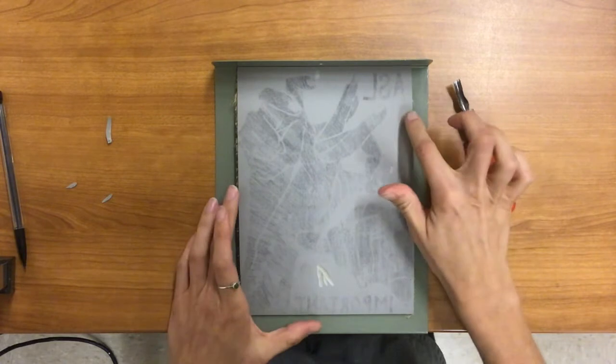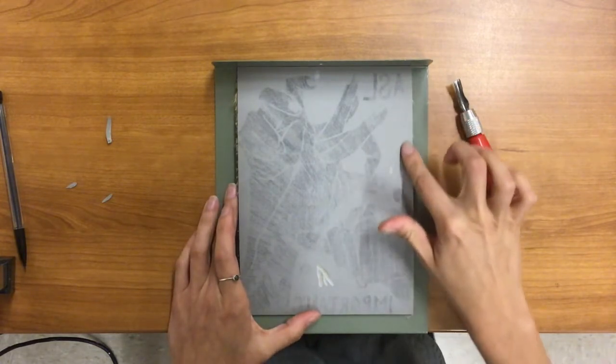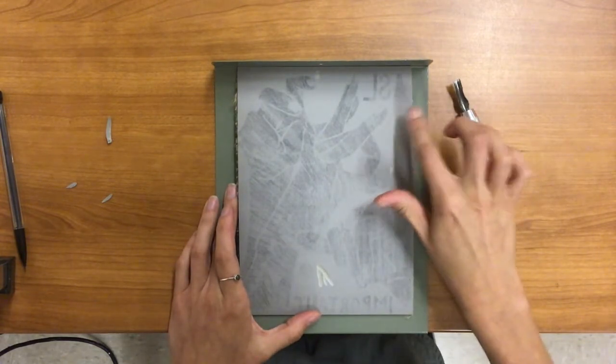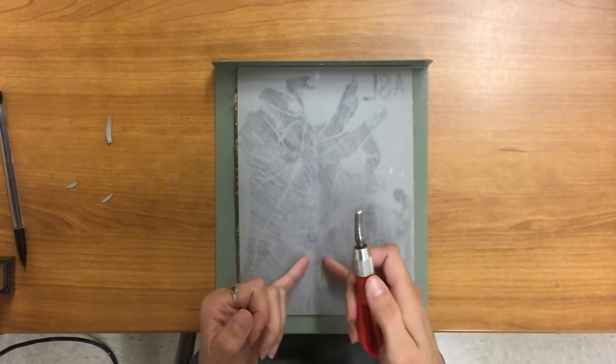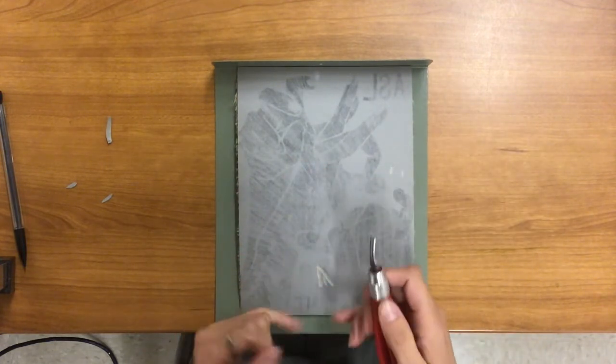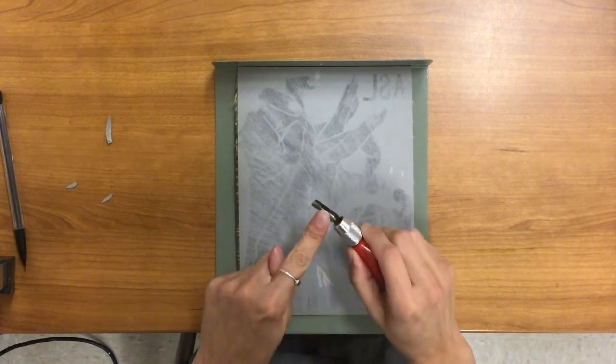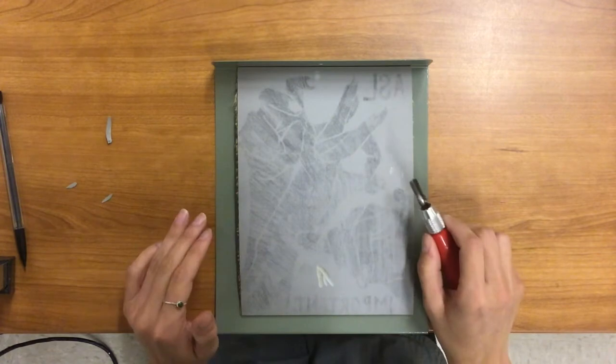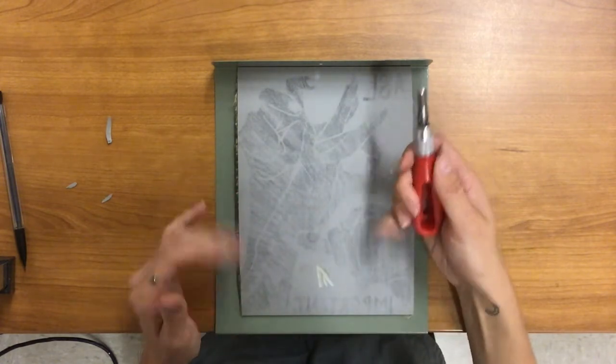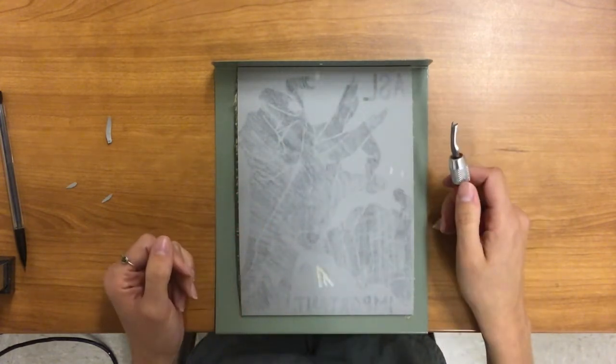I would play around with some areas that you have really large amounts of white space before you start going into those details. So carve away a large area first so you can experiment with different carving tips and just so you can get used to using this tool before you have to do small tiny important details.